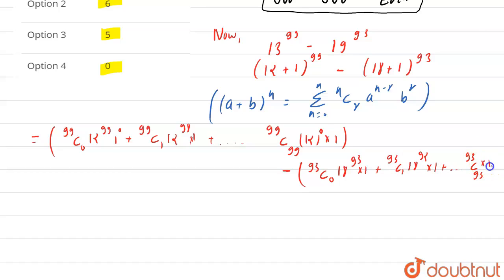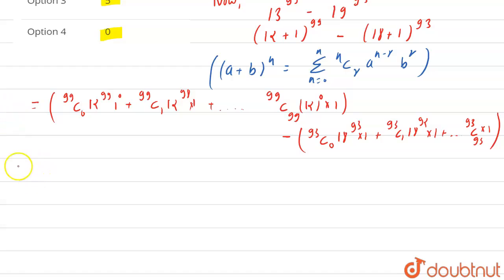So you can see that we can also write it as 12 power 99 plus 99 C 1 into 12 power 98 times 1, closing bracket, minus 93 C 0 which is 1, so it is 18 power 93 plus 93 C 1 times 18 power 92, and so on.